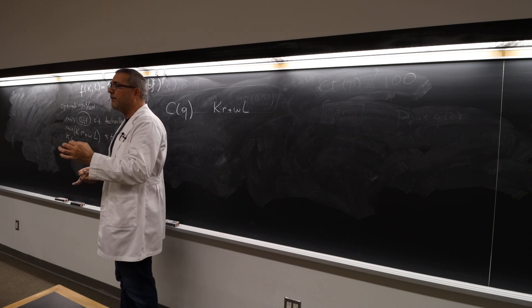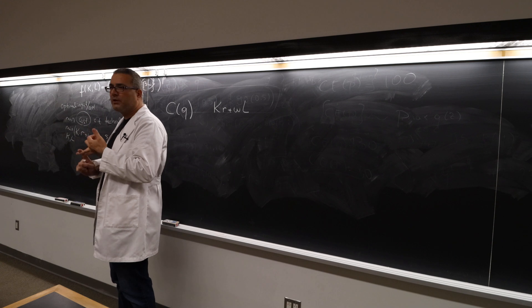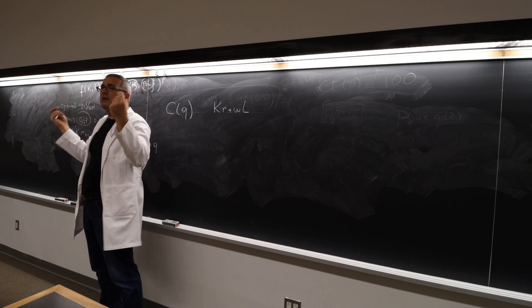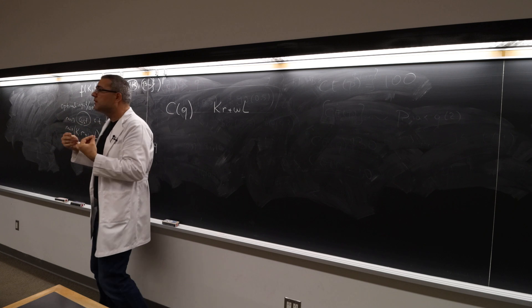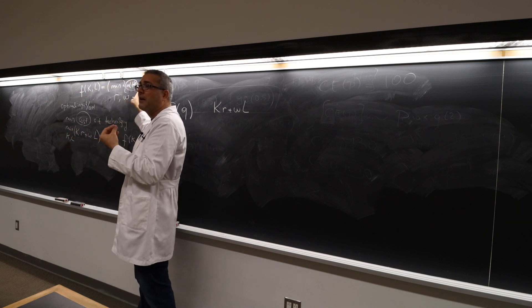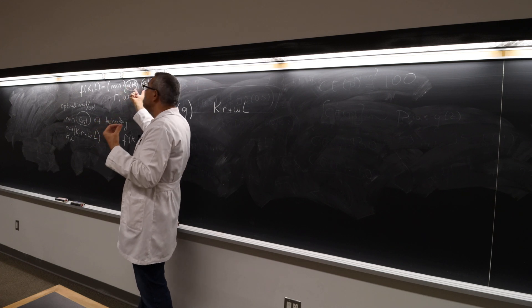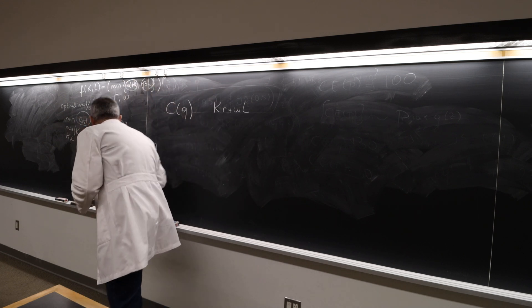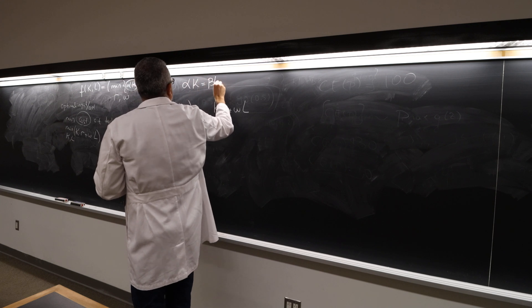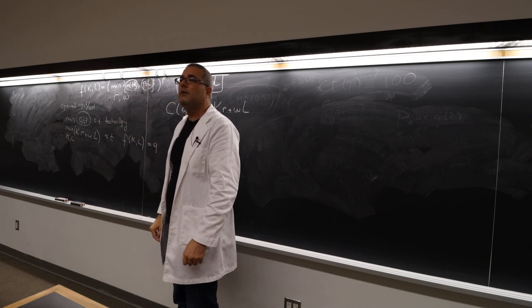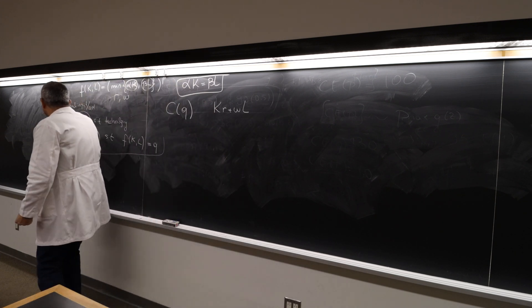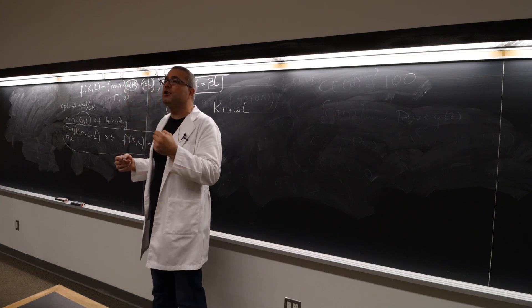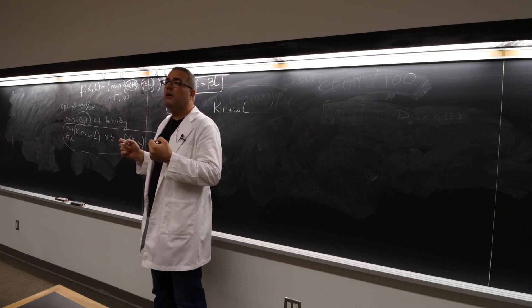This is always the case in Leontief forms — same for utility function, same for production function. So if you are choosing something optimally to minimize or maximize something, you shouldn't waste anything. Which means you should always choose capital and labor so that alpha K equals beta L. Optimality implies alpha K equals beta L, always. You don't really need to solve this optimization problem because we solve it just to get a relationship between capital and labor — and I already got it.